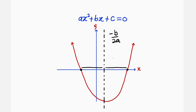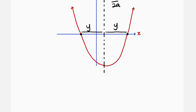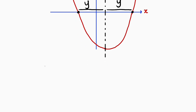Let the distance be equal to y. Therefore, if we add y, we are going to obtain one root, and if we subtract y, we obtain the other root. So our two roots become: x1 equals the line of symmetry — negative b divided by 2a — plus that distance y.